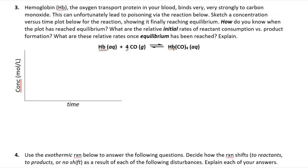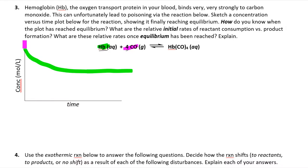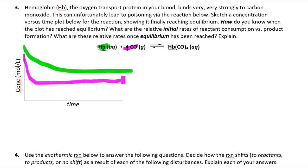We see that hemoglobin reacts with four carbon monoxide units to produce a complex. On a concentration vs. time graph: hemoglobin will show a downward trend until equilibrium and levels out. Carbon monoxide starts at some initial concentration and is used up four times faster than hemoglobin — for every one hemoglobin we use up four CO — so it has a much steeper initial slope and then levels out at equilibrium.